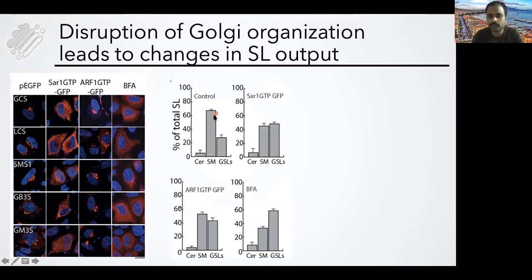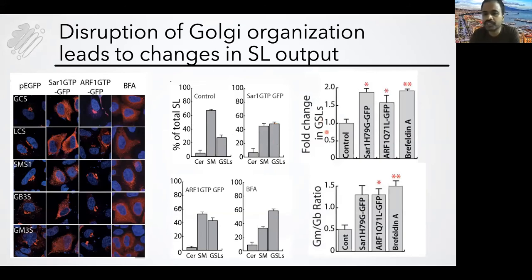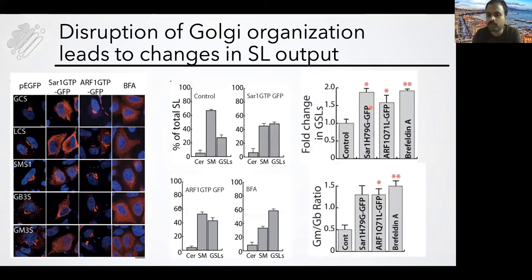What we found was that in control cells, 70% becomes sphingomyelin and 25% becomes glycosphingolipids. When you destroy the organization of the Golgi, this fraction changed — only about 40 to 50% was sphingomyelin and glycosphingolipids almost doubled, going from 25% to almost 50% in some cases. Glycosphingolipids increased in all three experimental conditions. We also found that cells tend to produce more gangliosides than globosides, so the GM to GB ratio also increased in these cells.